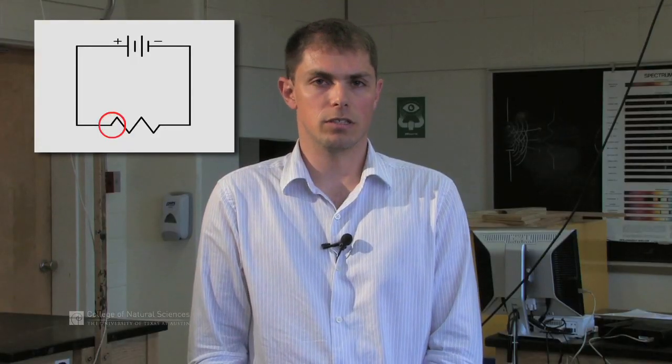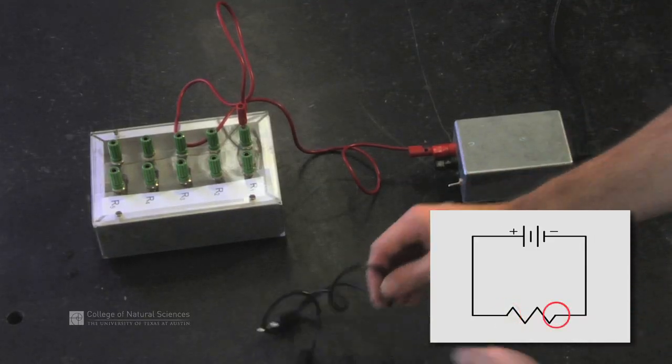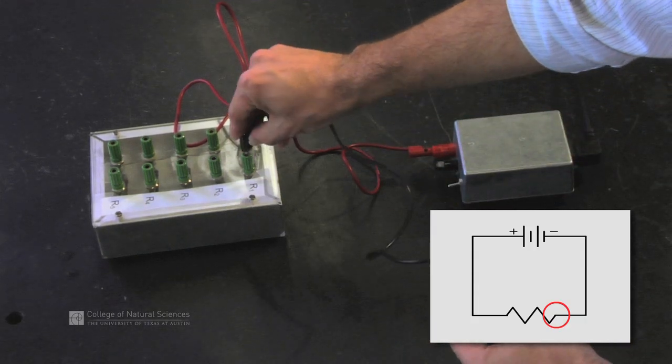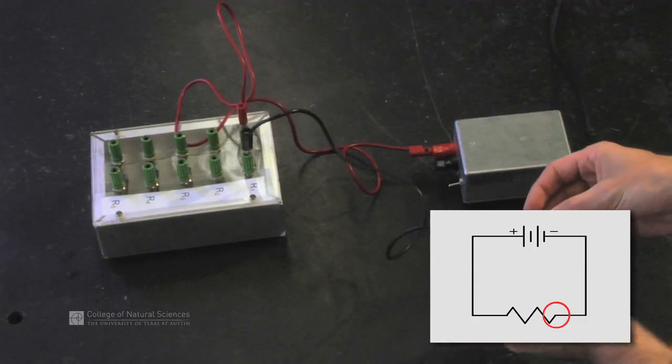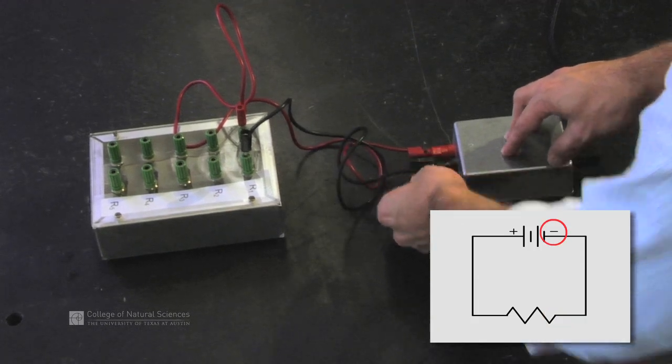If we follow the loop around, we can see that the resistor is connected to a second wire. That second wire then is connected back to the negative terminal of the power supply.